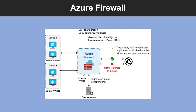Azure Firewall uses a static public IP address for your virtual network resources, allowing outside firewalls to identify traffic originating from your virtual network. The service is fully integrated with Azure Monitor for logging and analytics.